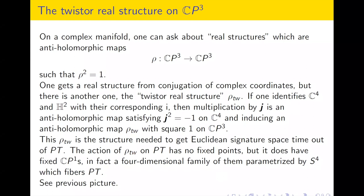A question: is there a way of knowing all possible real structures available? The answer is that for CPN, if N is odd there are always two: the usual complex conjugation and this twister one. If N is even, like CP2, there's only the usual one. So for CP3 — N = 3 is odd — both real structures exist.